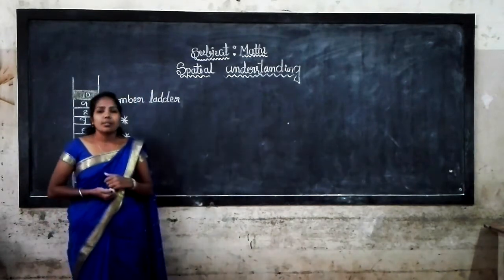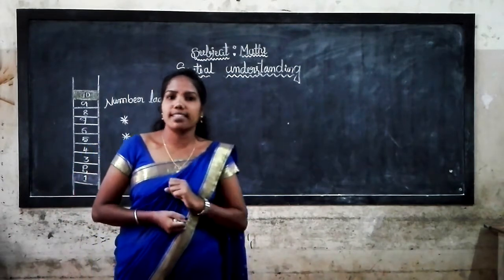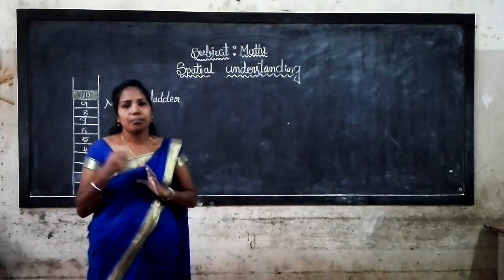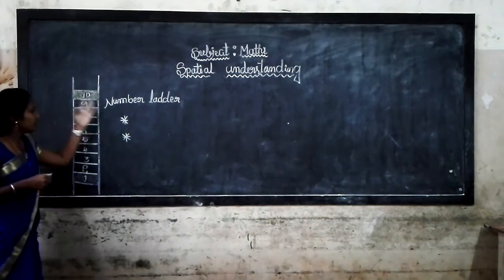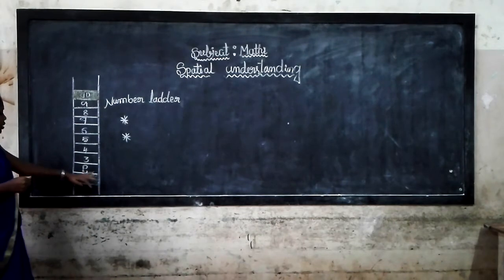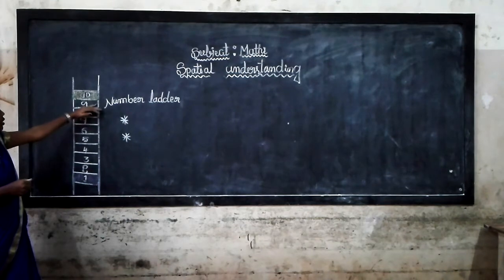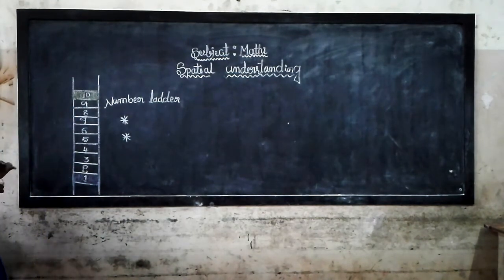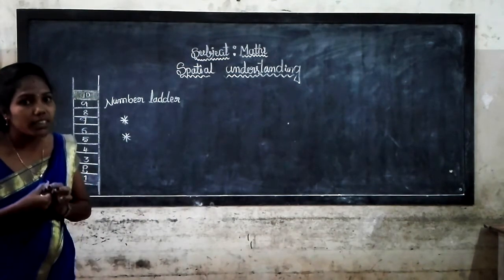Something which is kept at a higher level is called top. Something which is kept at a lower level is called bottom. Now look at the numbers on the blackboard — from 1, 2, 3, 4, 5, 6, 7, 8, 9, 10. Now Satham, you have easily found out which number is at the top of the ladder.